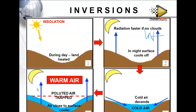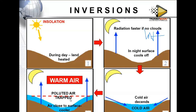As cold air descends into the valley bottom at night, it displaces the warm air that was there. The warm air rises from the valley bottom but cannot surpass the descending cold air above, so it is trapped halfway up the valley. This creates a zone of warm air in the middle — what we call the thermal belt — where temperature increases with altitude.